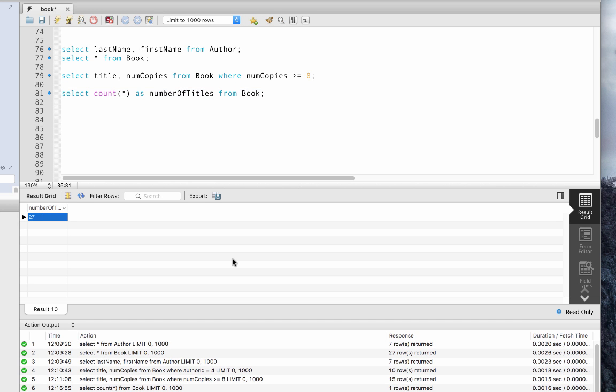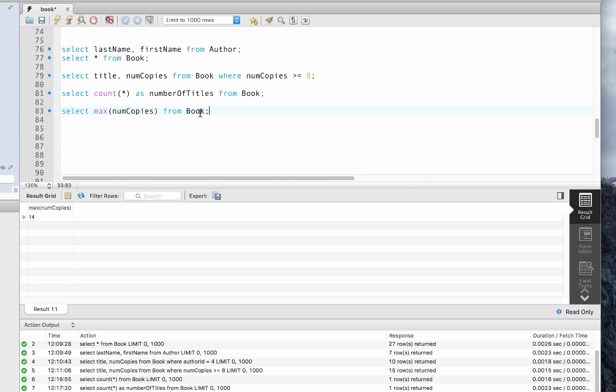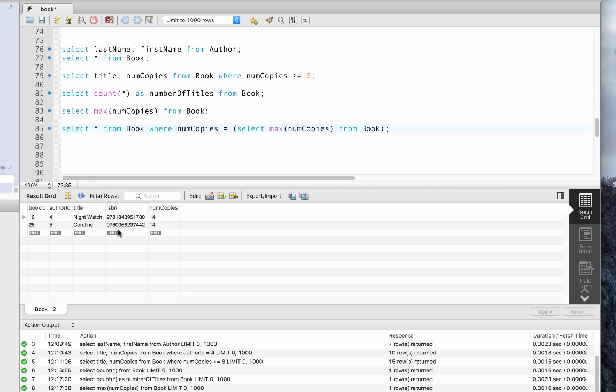Which book or books do we have the most number of copies of? This doesn't give us the result that we wanted, but it does give us the maximum value of that column. We can use this result to form a more complex query. We actually have two books with 14 copies.